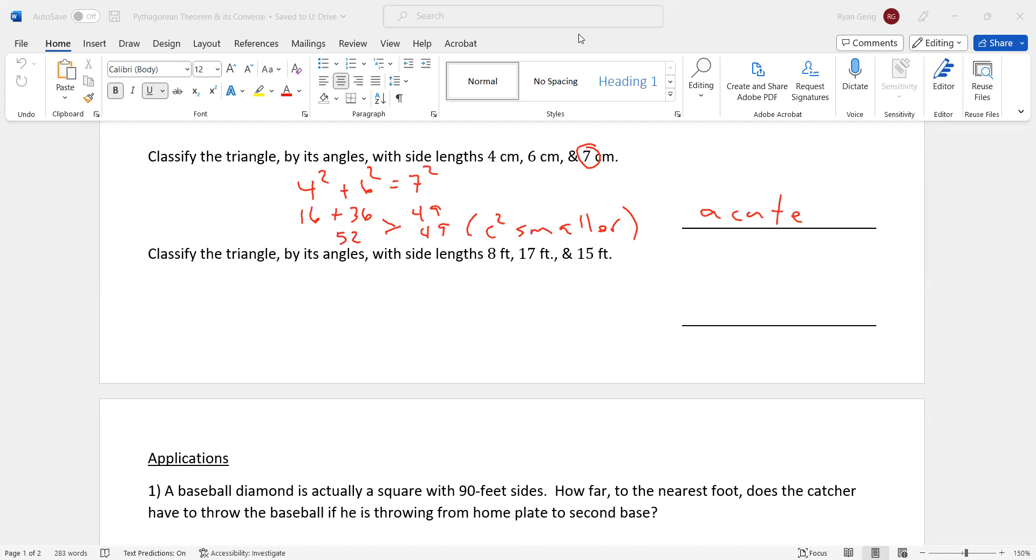Next one, biggest side is 17. So 8 squared plus 15 squared. That's 17 squared. So that's 64 plus 225. 17 squared is 289. If I add those two numbers, I get 289 and 289. They're equal. What does that mean? If they're equal, it's a right triangle.